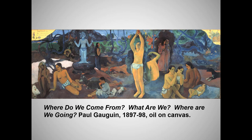Read from right to left, like the Quran and the Golden Haggadah, this captures cycles of human life. Note Gauguin's heavy use of symbolism, with the various figures representing stages of human life. The baby at the far right signifies newborn life.